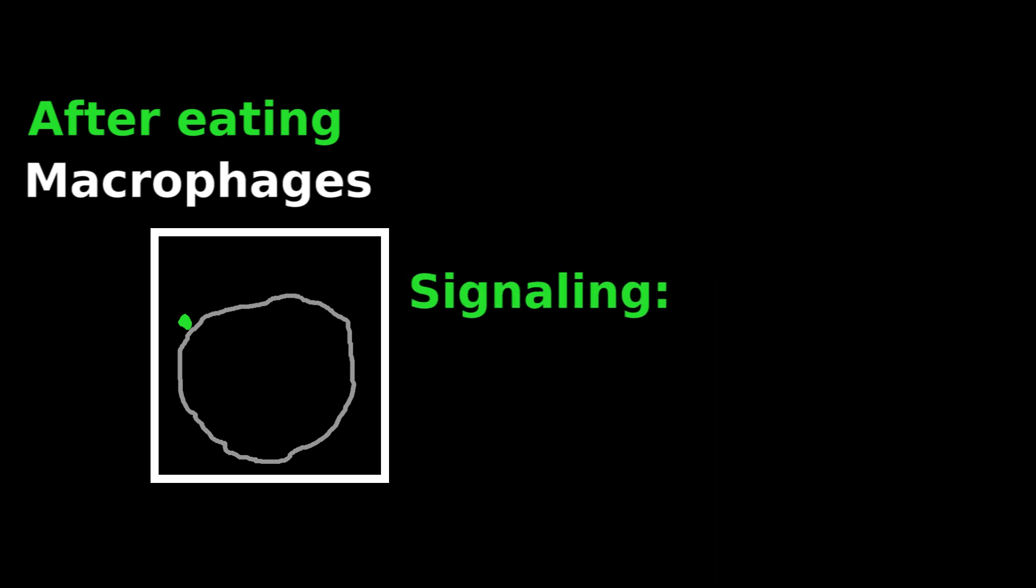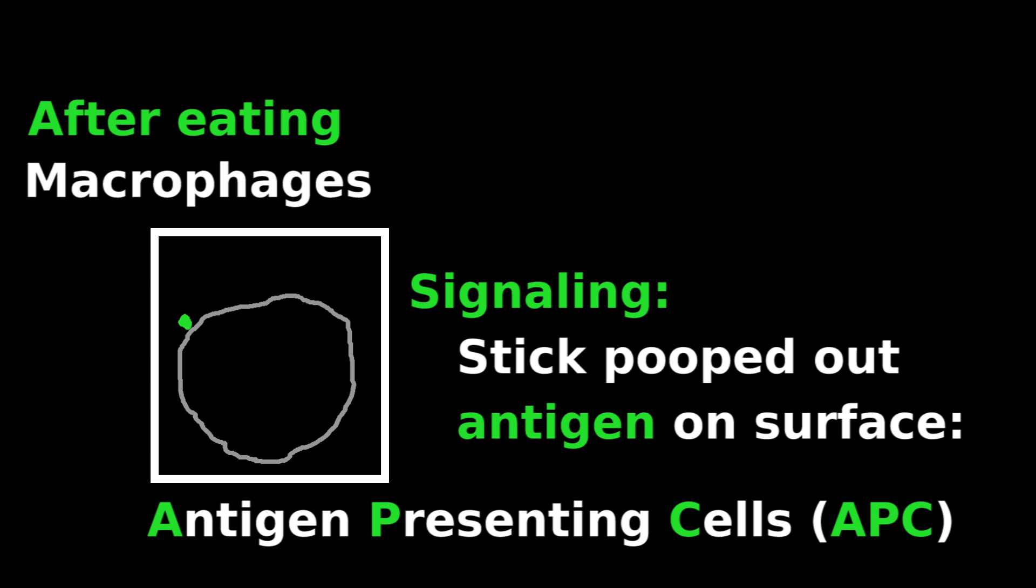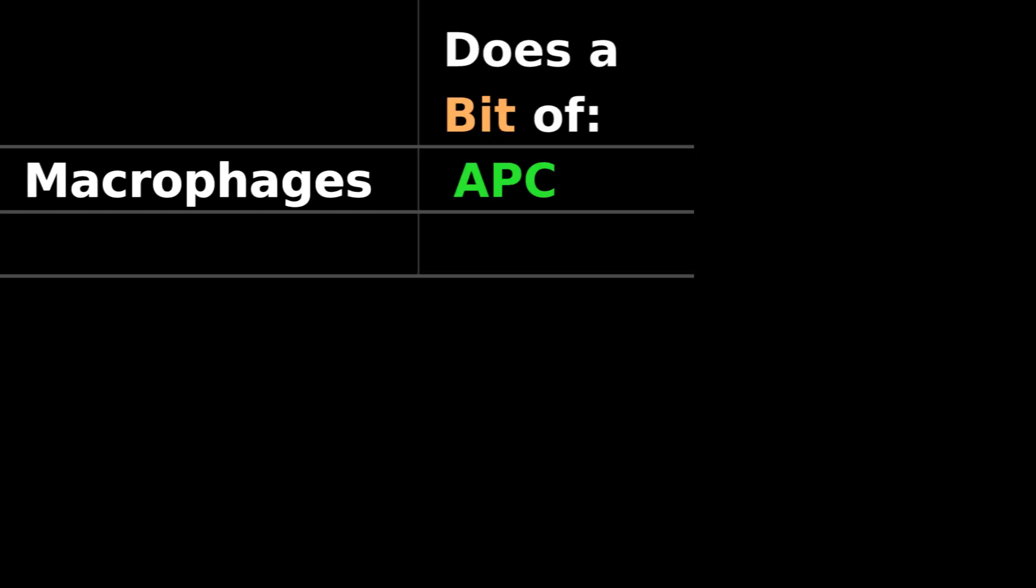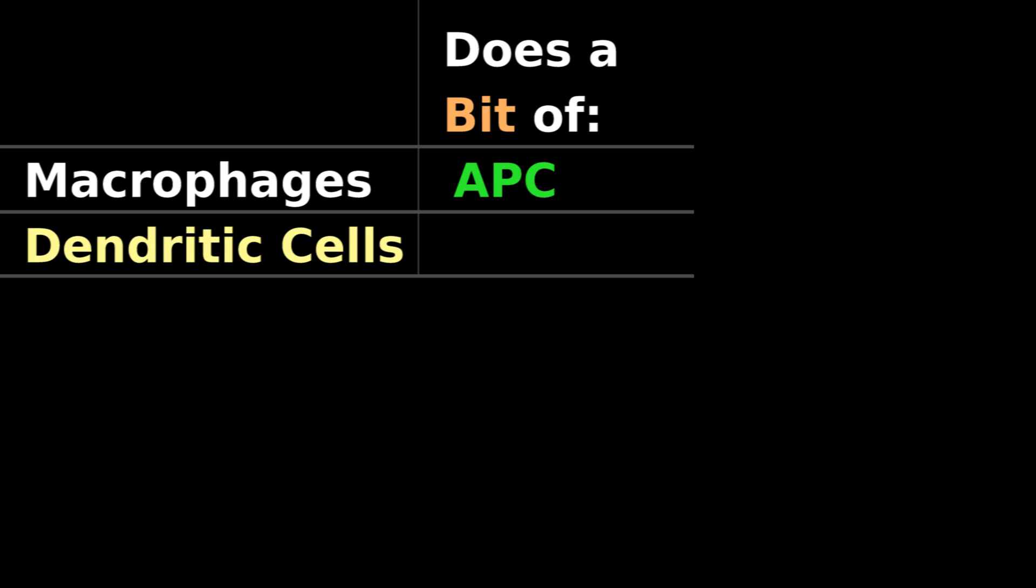This signaling by sticking pooped out antigen on your surface is done by antigen-presenting cells. While macrophages do a bit of antigen-presenting, it's the dendritic cells that are known primarily as antigen-presenting cells.